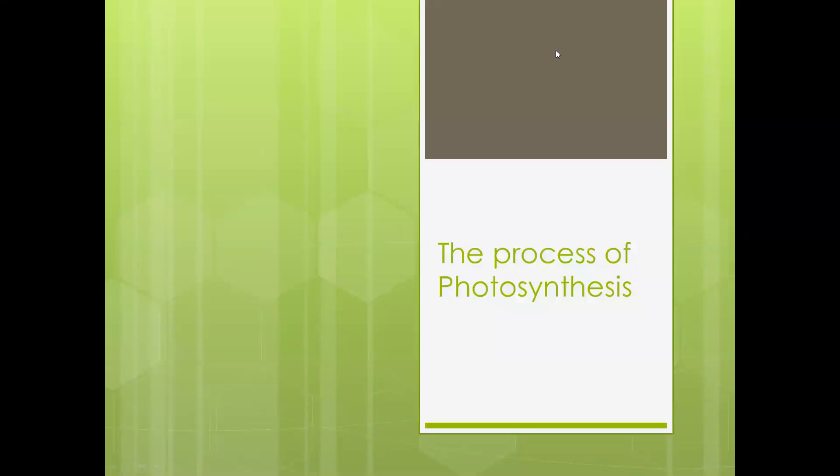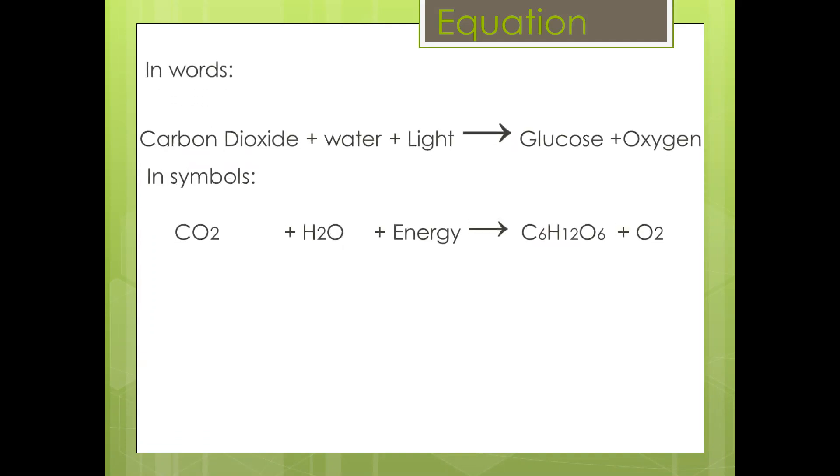We look now at the process of photosynthesis, which should be familiar for all learners that have already reached grade 11. The equation of photosynthesis is that carbon dioxide plus water plus light, with the assistance of enzymes which will speed up the reaction, and chlorophyll within the chloroplast.